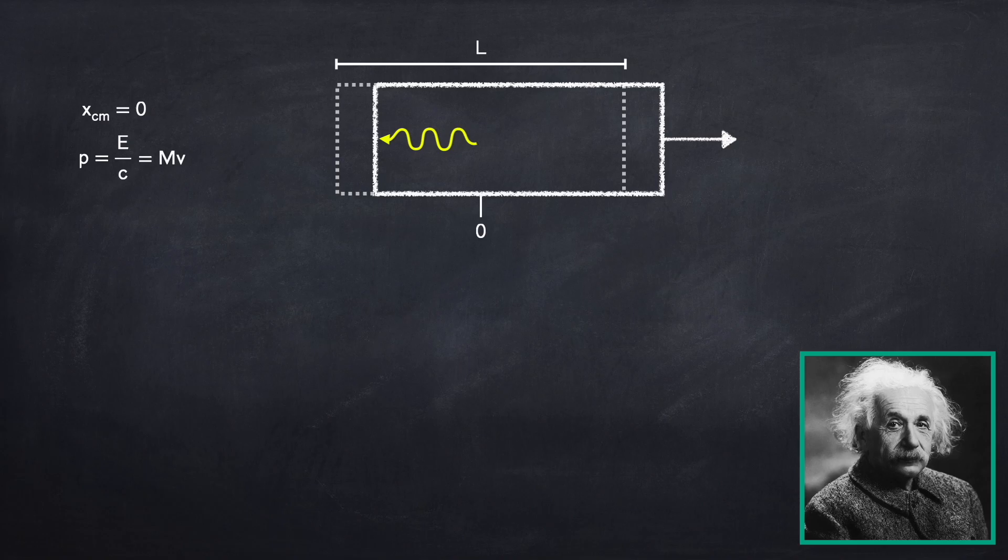Let's call the distance that the box has shifted to the right delta x. Now Einstein thought about this and realized there's a problem here. Even though momentum has been conserved throughout this entire process, the center of mass of the box has now shifted to the right by delta x. So the center of mass position of this whole system has changed.